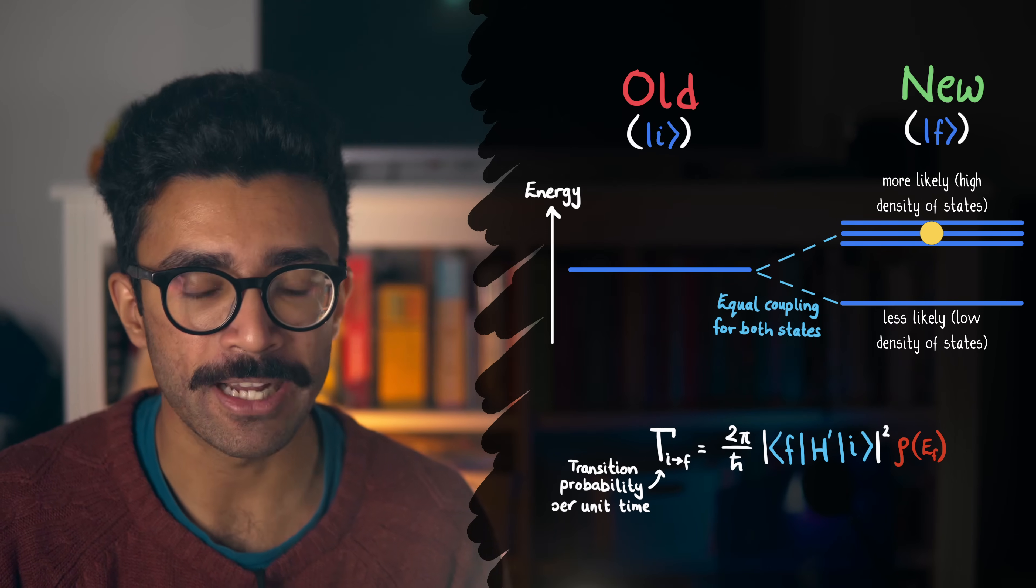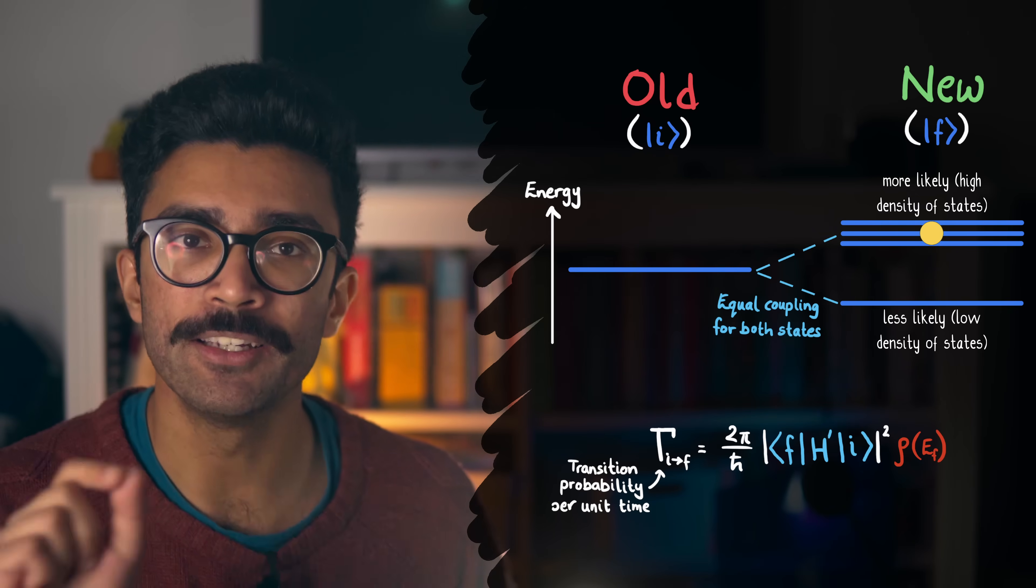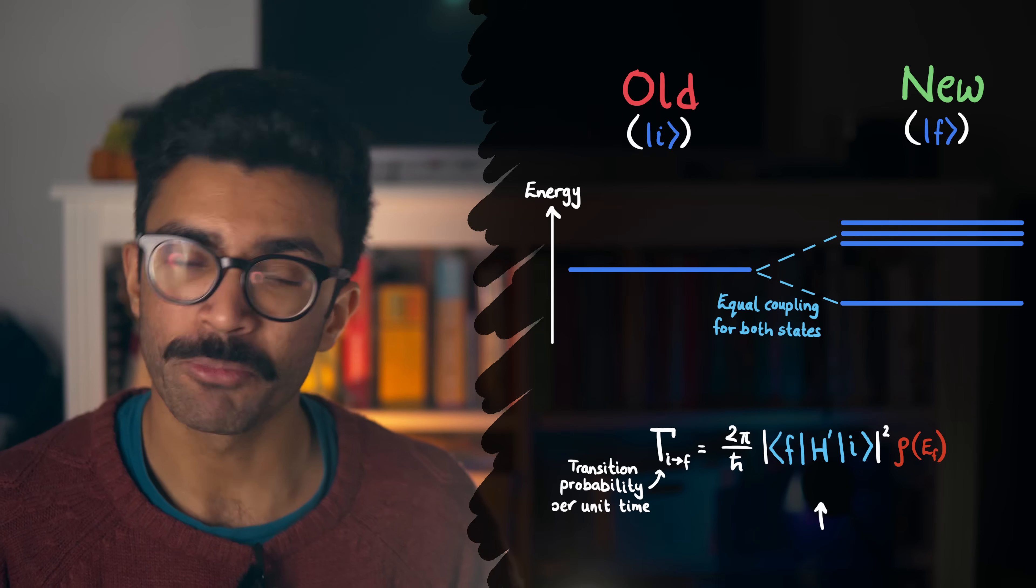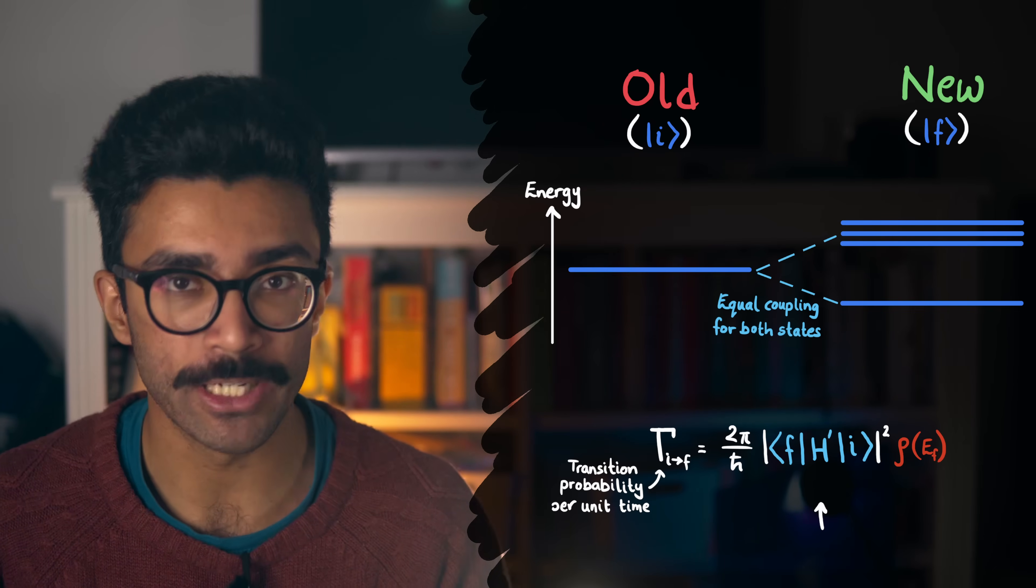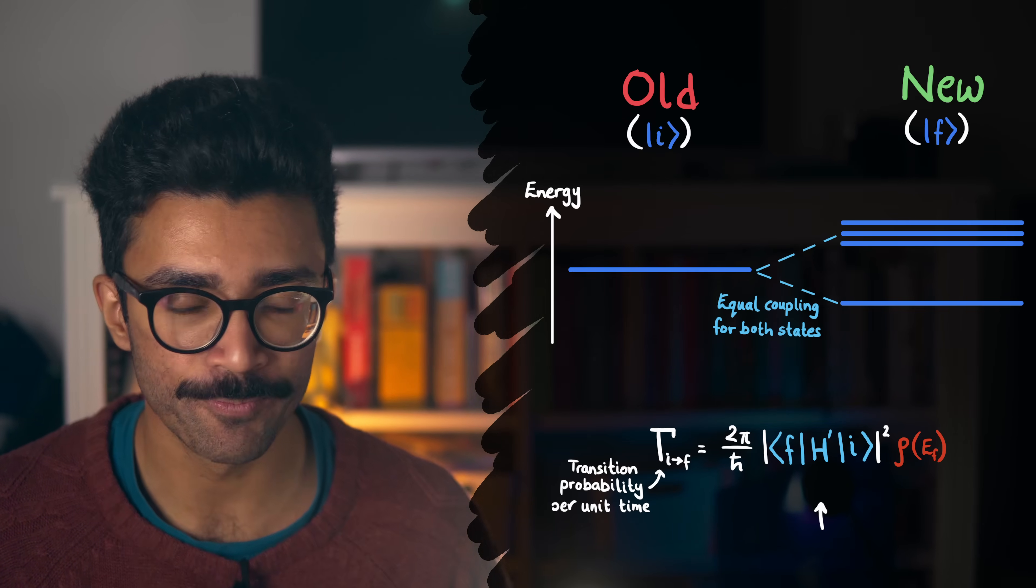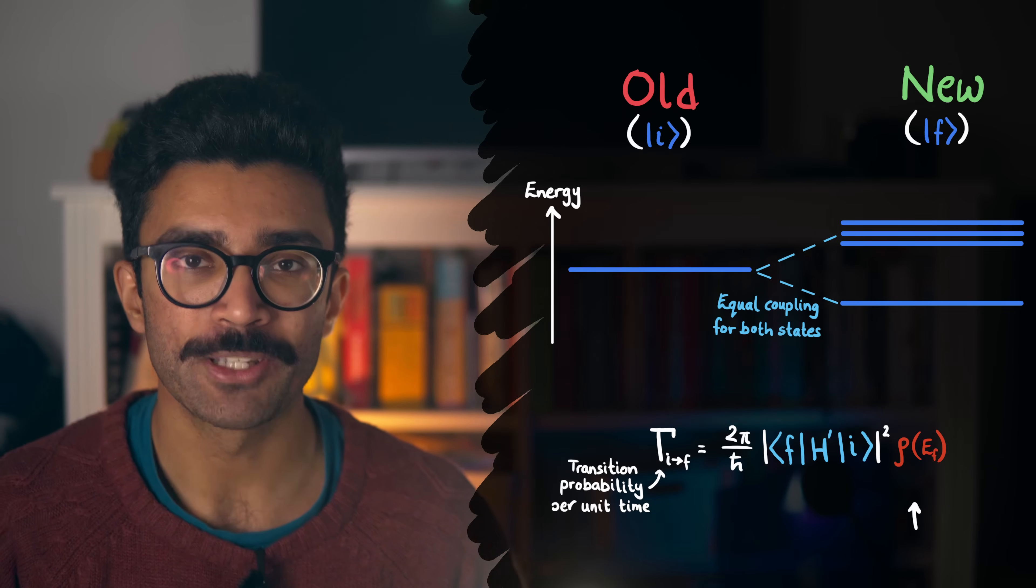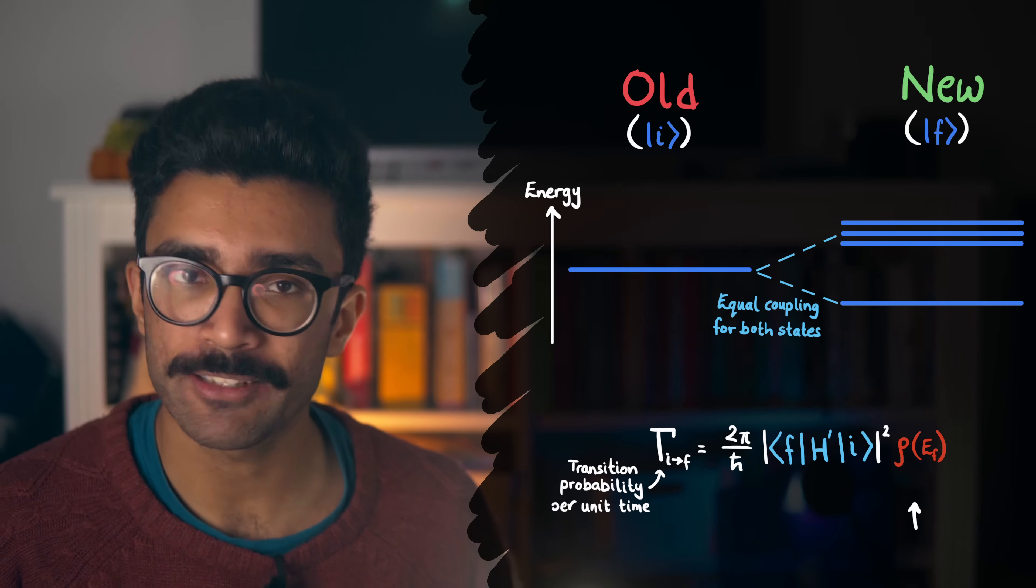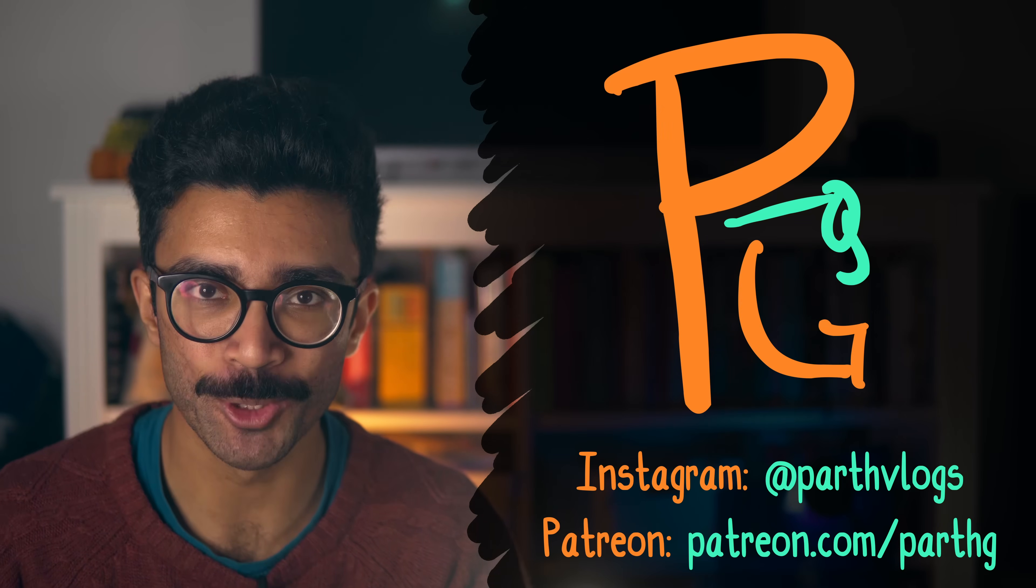So basically, we have two main factors that affect how likely our electron is to go from our old state to a particular new state. One, if the energies of the old and new state are close, plus some other details that aren't important here, then the two states are considered fairly strongly coupled, and the electron is more likely to transition into this state. And two, if there's an energy value or range that we're considering, where there are lots of states packed around it, then the electron is more likely to transition to that region. And that is a very basic, simplified description of Fermi's golden rule of quantum physics.